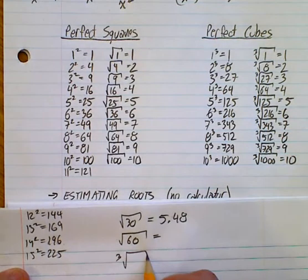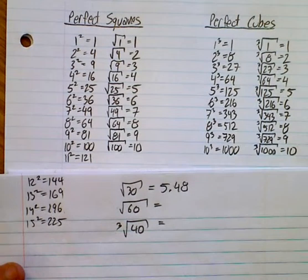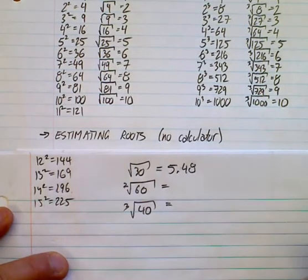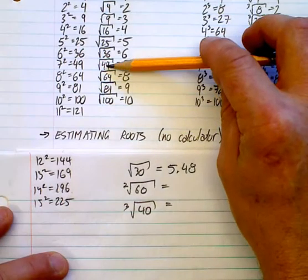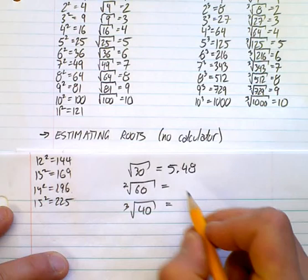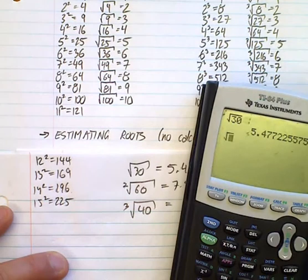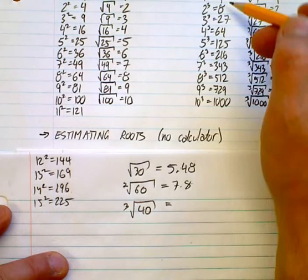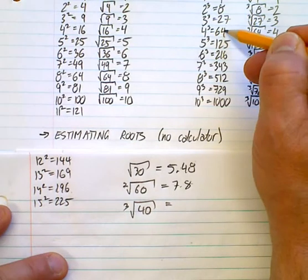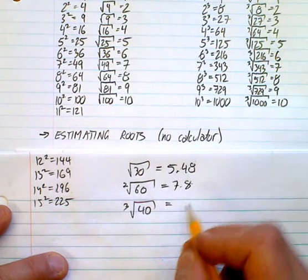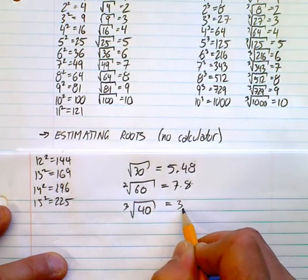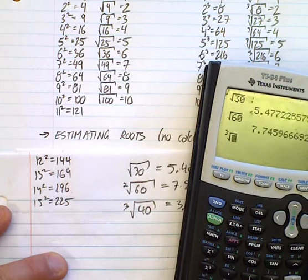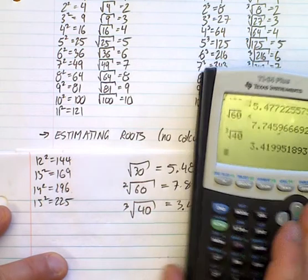How about the square root of 60 or the cube root of 40? For square root of 60, it's between 49 and 64, closer to 8, so I'll go 7.8. Actually 7.74, so I was close. For cube root of 40, it lies between 27 and 64, almost halfway. That's between 3 and 4, so how about 3.4. Pretty good at estimating!